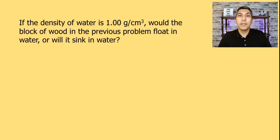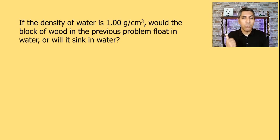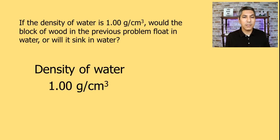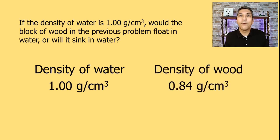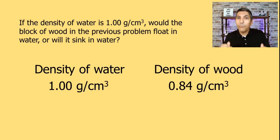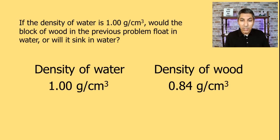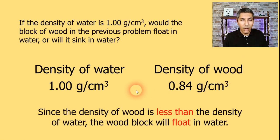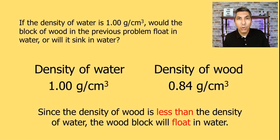Now let's take this one step further. If the density of water at this temperature is 1.00 gram per cubic centimeter, would the block of wood from the previous problem float or sink in water? The density of water is about 1 gram per cubic centimeter, and the density of the block of wood was about 0.84 grams per cubic centimeter. Something that is less dense than a liquid will float in that liquid, while something more dense will sink. Since the density of wood is less than the density of water, the wood block is going to float. If we had a block with a density over 1 gram per cubic centimeter, it would sink.